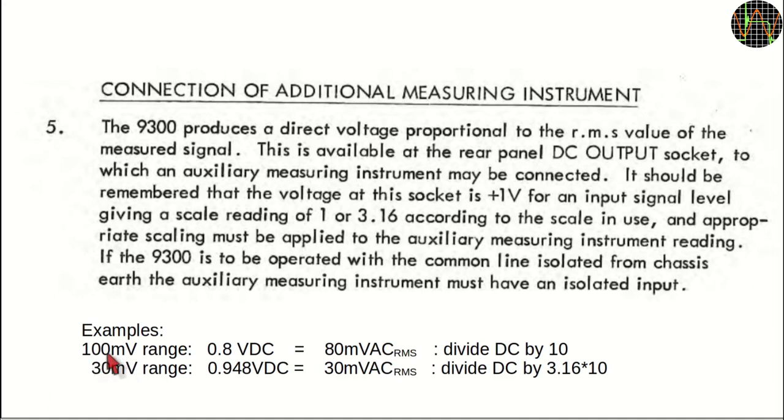The only thing to remember is that you still need to apply some scaling depending on what range was selected. For example, in the 100mV range, if the DC output shows 0.8V, the meter is measuring an AC RMS voltage of 80mV. Or in the 30mV range, a DC output of 0.948V means the AC RMS voltage is exactly 30mV. Sounds complicated, but it is not too difficult to keep a little conversion table with the scaling factors for all 11 ranges.